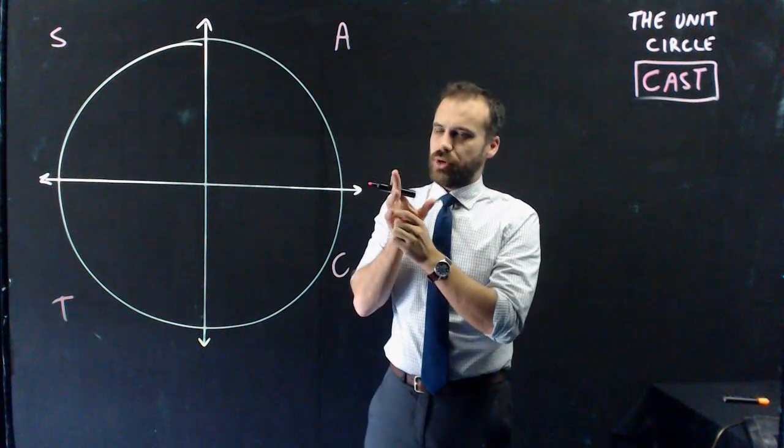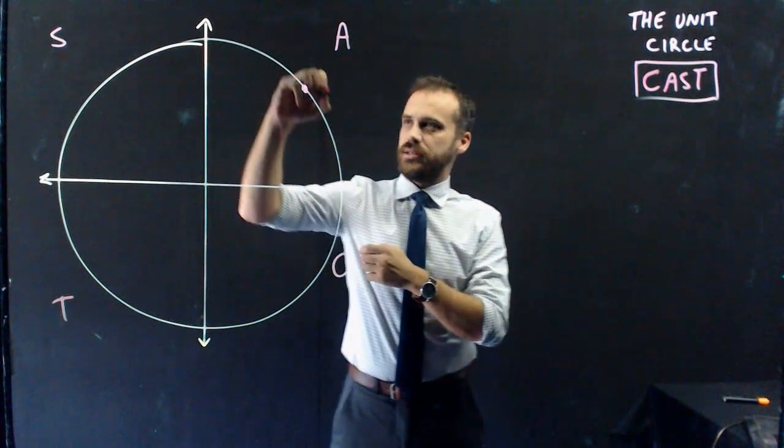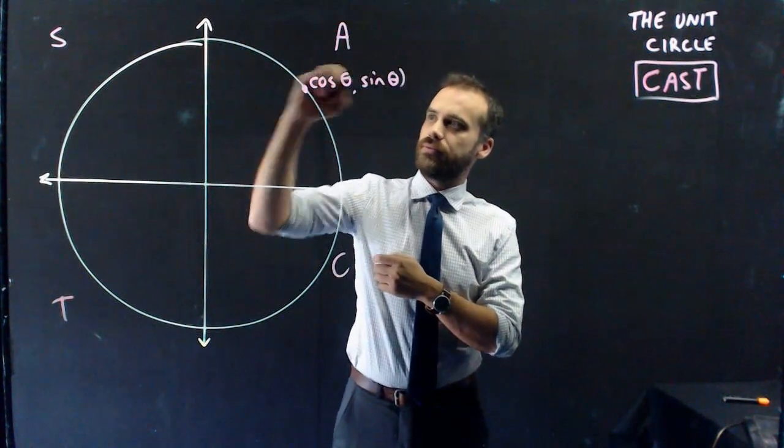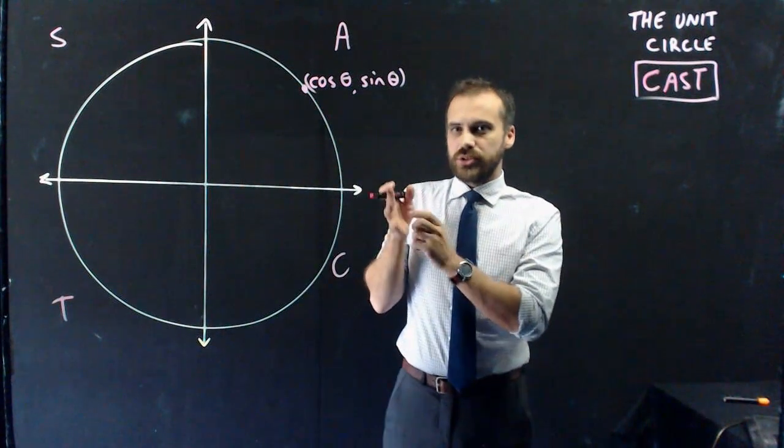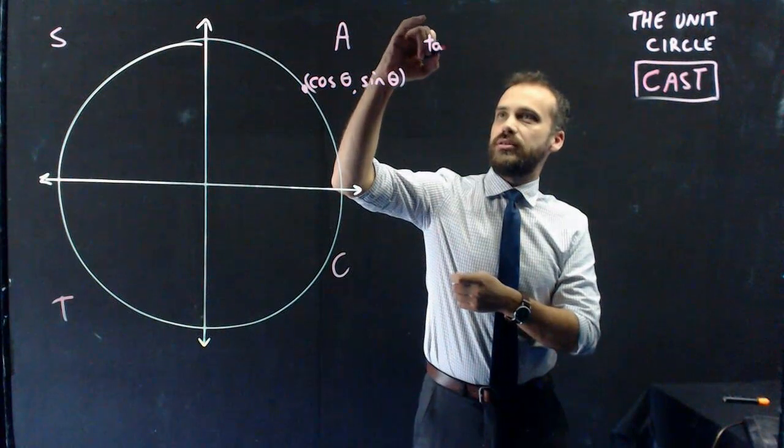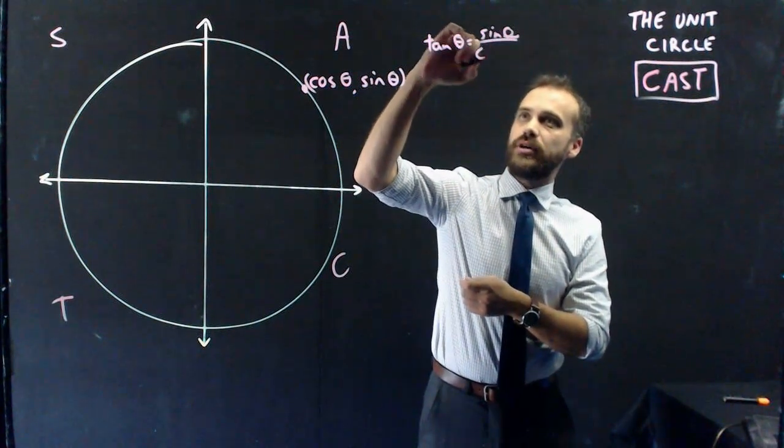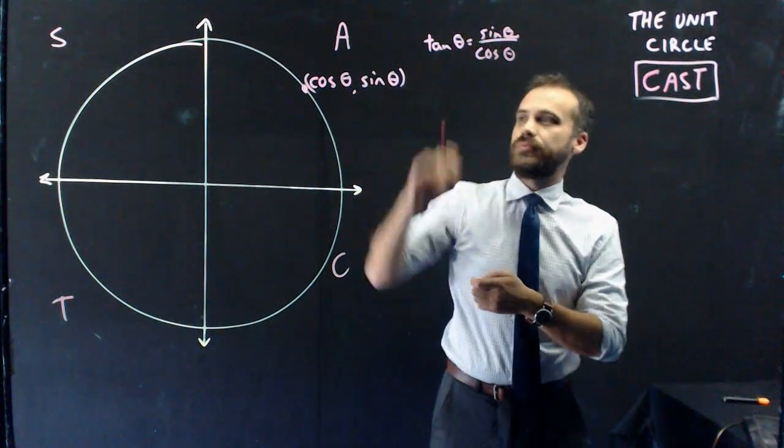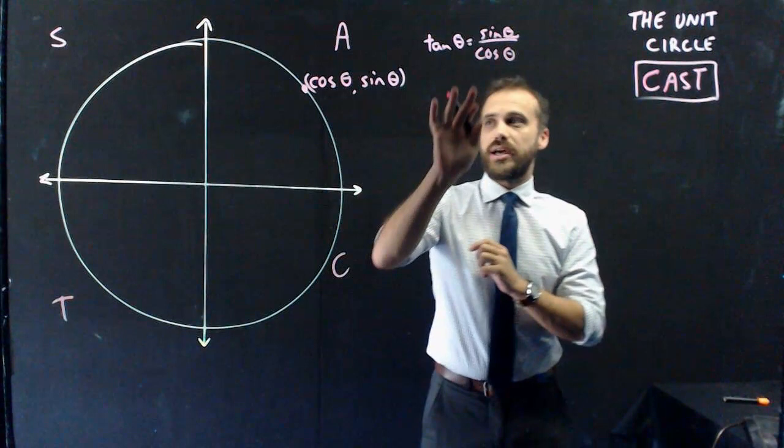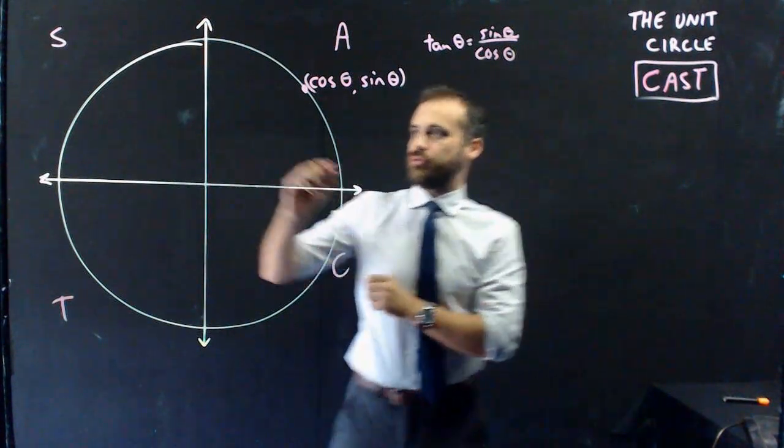So, we're doing trig ratios at the moment and we know that this dot here is equal to cos theta, sin theta, and we also know that if we wanted to know the tan ratio, we'd just do tan theta equals sin theta over cos theta. Alright, so cos theta, sin theta, and tan theta are all positive in that quadrant.